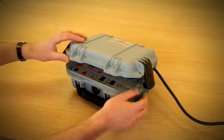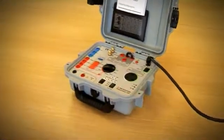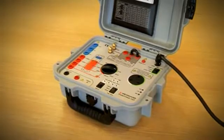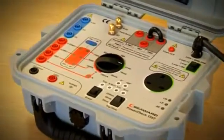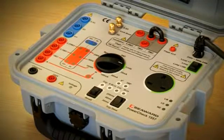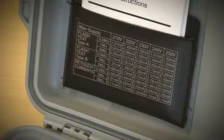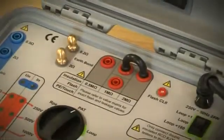The Seaward PowerCheck 1557 is the first calibration verification instrument for PAT and installation testers. It can be used to confirm the correct operation of all measurements commonly found on 17th edition installation testers or PAT test equipment. It can also be used on RCD protected circuits and to check the operation of RCD and loop testers without tripping the RCD.